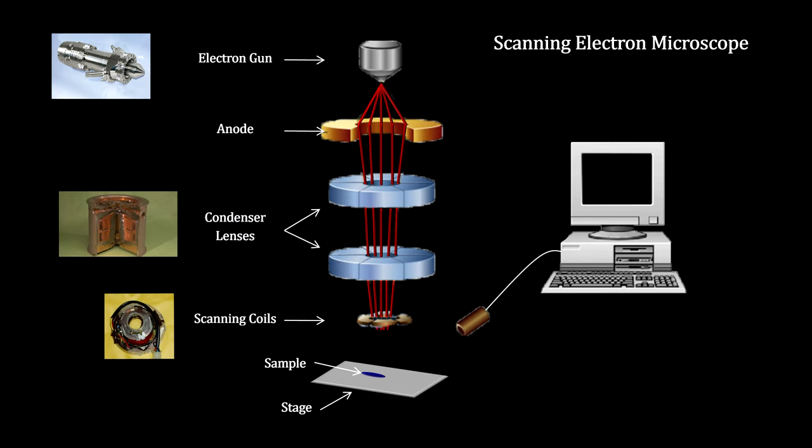Scanning coils are then used to focus the electrons onto a tiny spot on the specimen and move it across for a full picture of the surface.